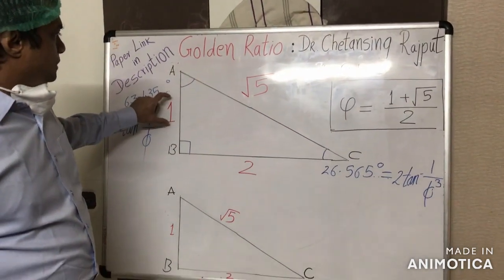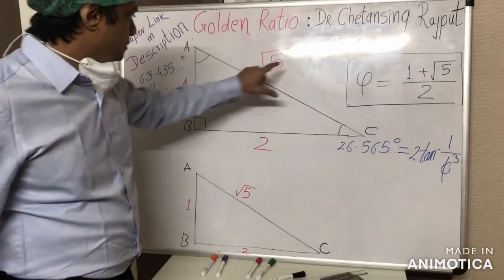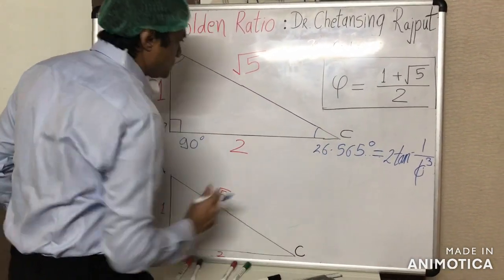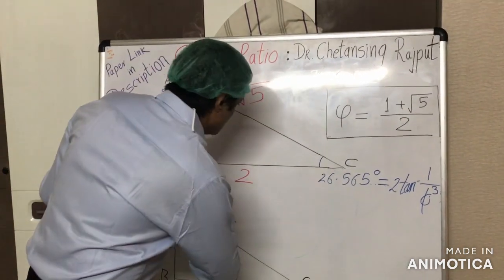The angle against the smaller cathetus and angle against the hypotenuse, 90 degrees and this 26 point something degrees.